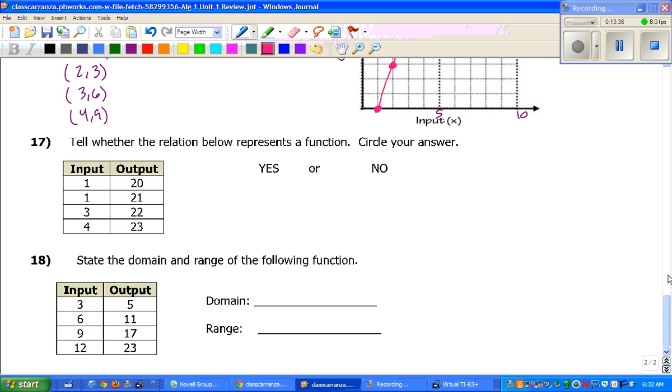We're almost done. Now, it says, tell whether the relation below represents a function, yes or no. Circle your answer. Now, every input needs to have exactly one output. And right there, there's a red flag because I see the number 1 twice, and it goes to 20 and to 21. That is not a function.